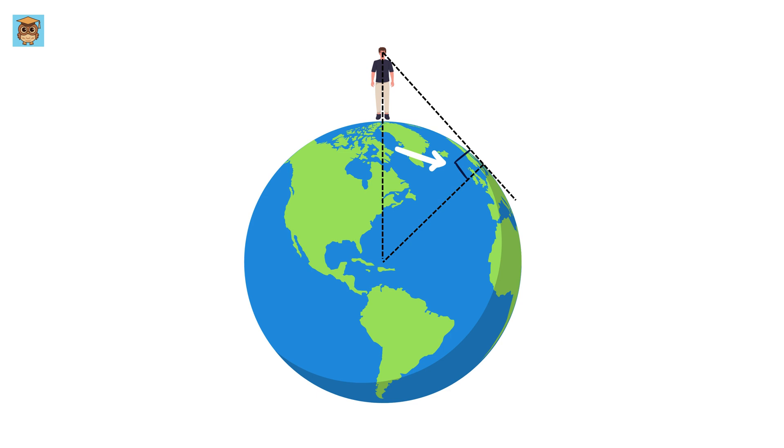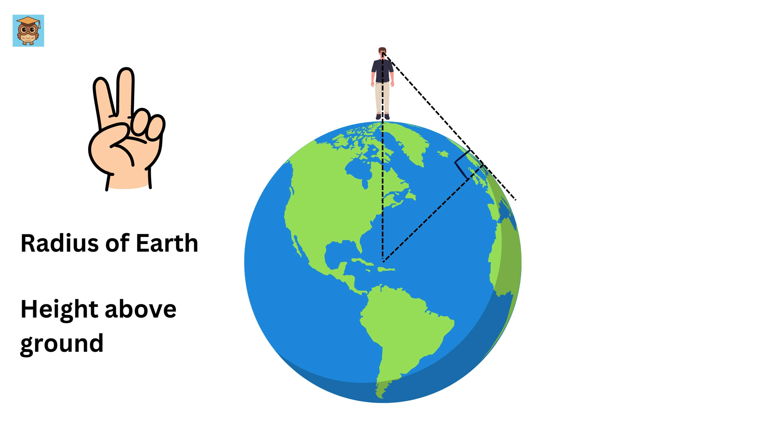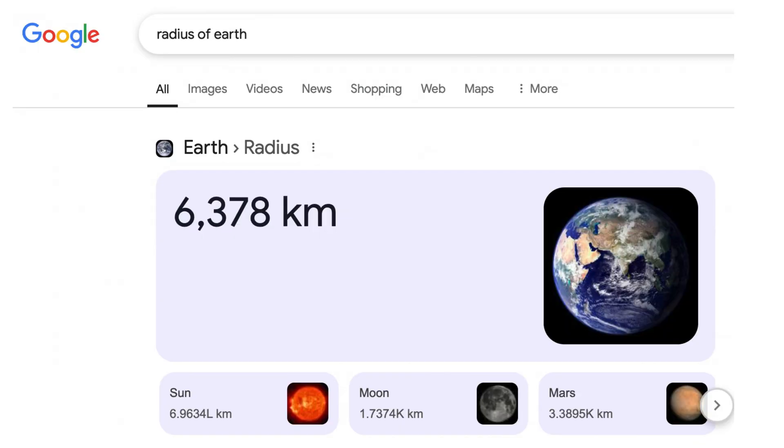Now, to solve this problem, we need two important measurements: the radius of the Earth and your height above the ground, as explained before. Scientists have already measured the Earth's radius to be about 6,378 kilometers.